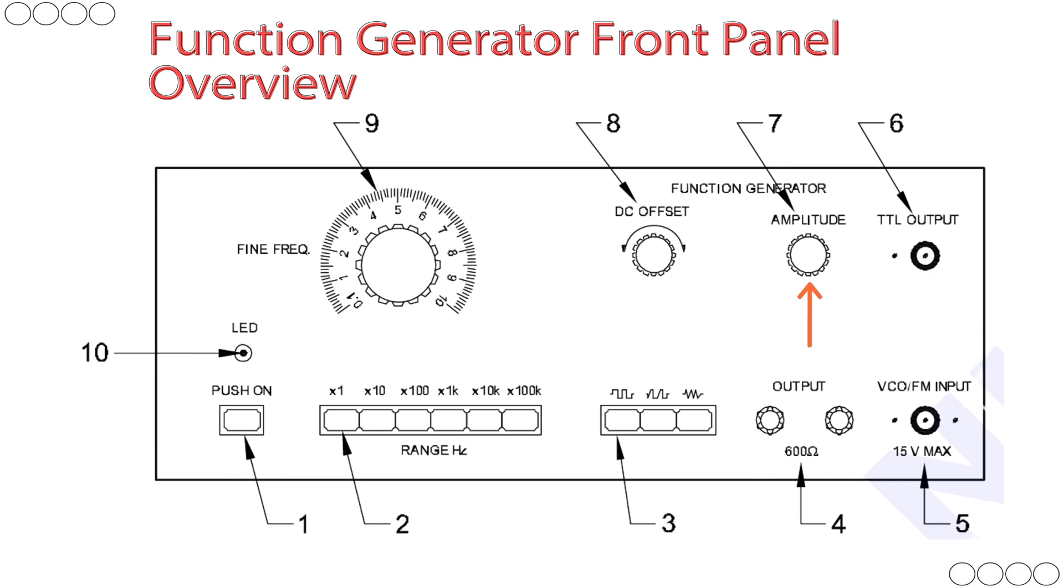Number seven. Amplitude control knob. Purpose: Adjusts the peak-to-peak amplitude of the output waveform. Usage: Helps prevent overloading the circuit or match signal level needs.